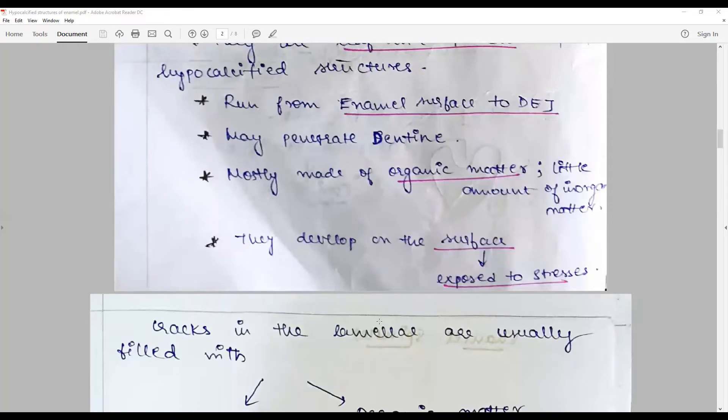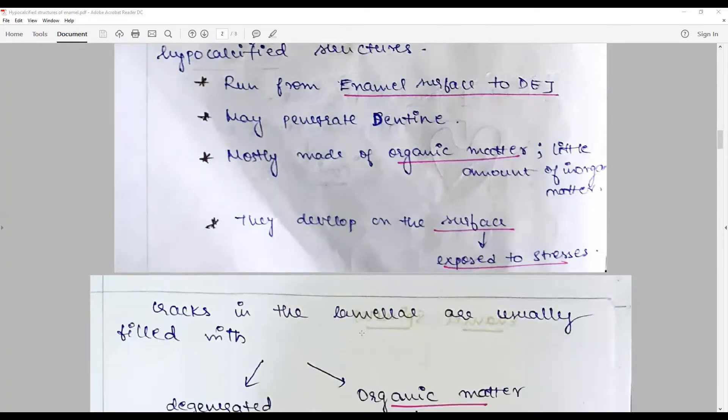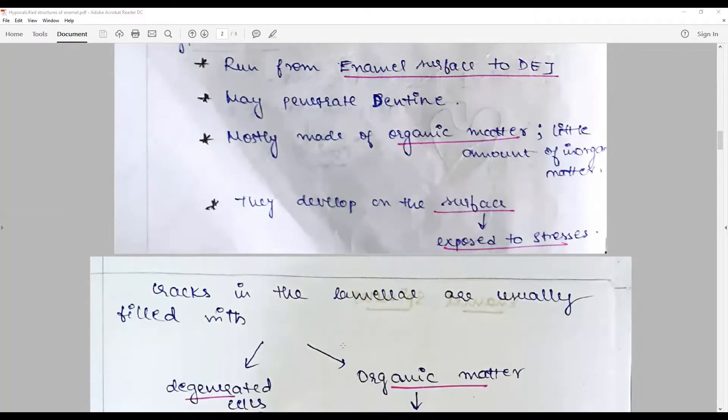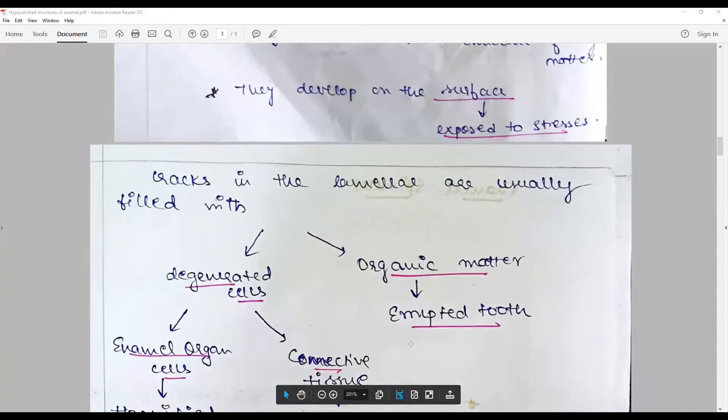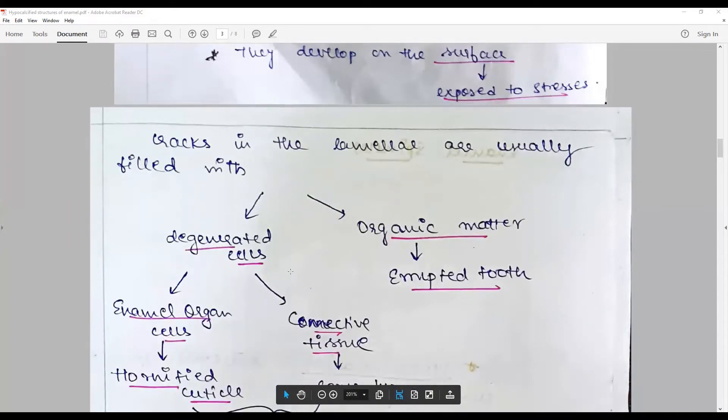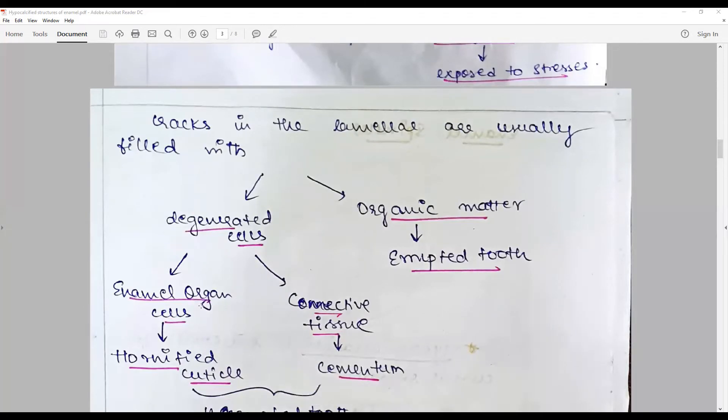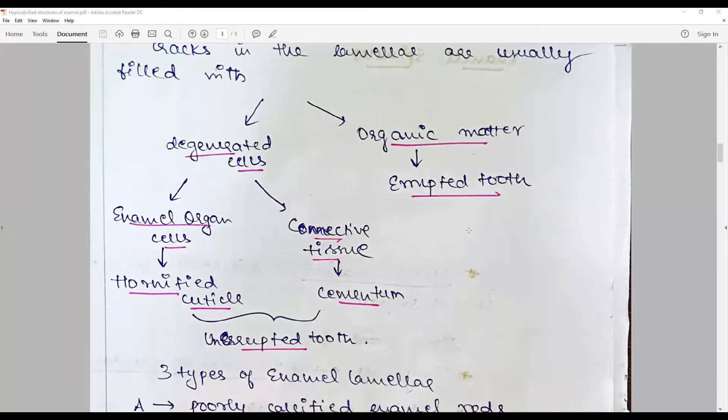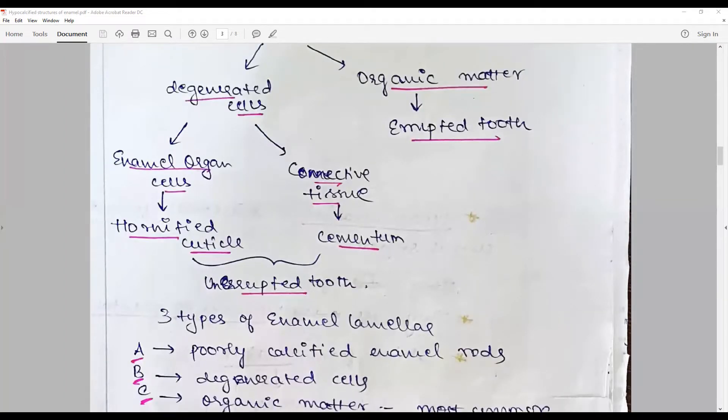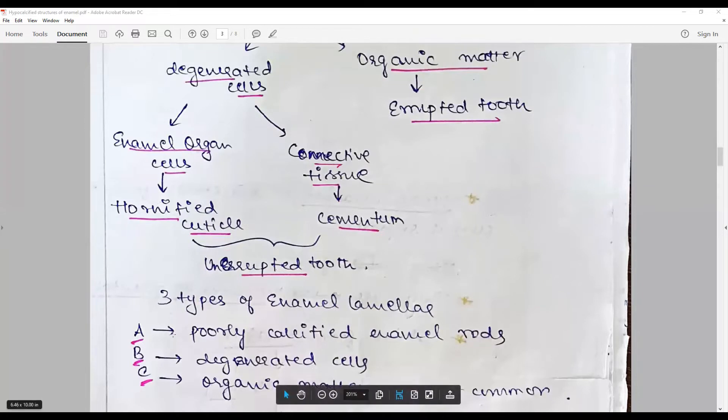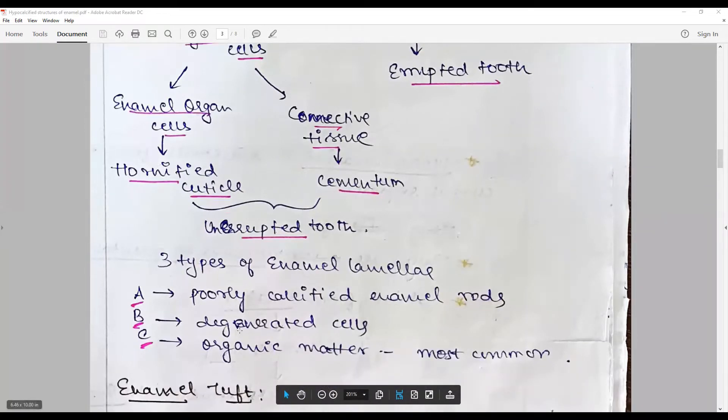The cracks and deformities associated with enamel lamellae are filled with organic material. They may contain enamel organ cells, keratinized cuticles, connective tissue materials, whereas organic materials such as food debris or pellicle may be seen in erupted teeth. They may serve as a nidus for dental caries formation. They are of three types: Type A is poorly calcified enamel rods, Type B is degenerated cells, Type C is organic matter, and this is the most common.